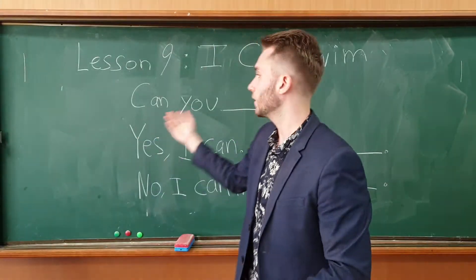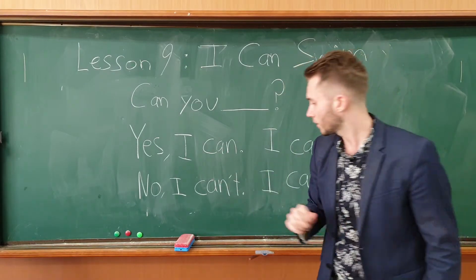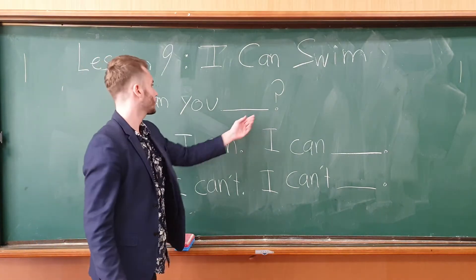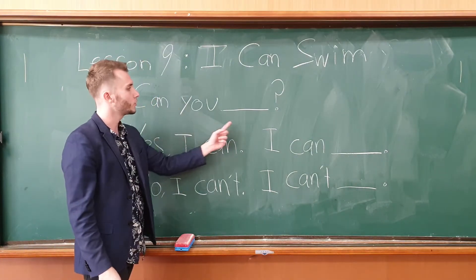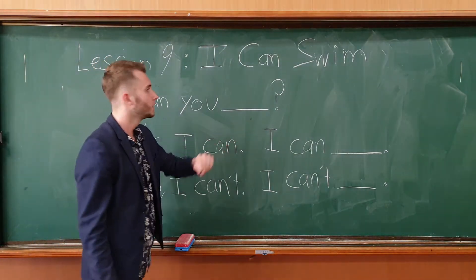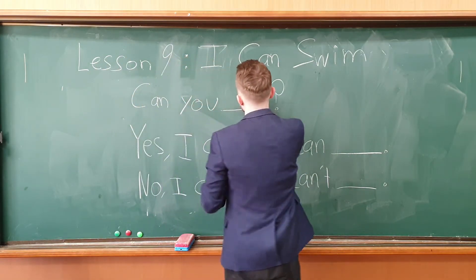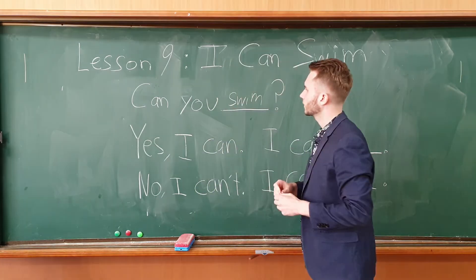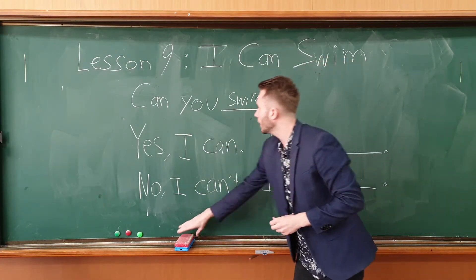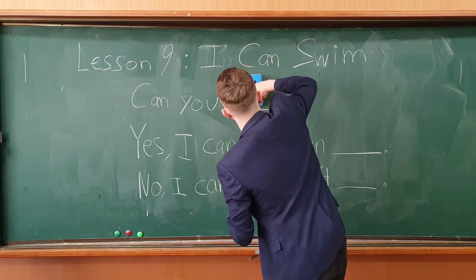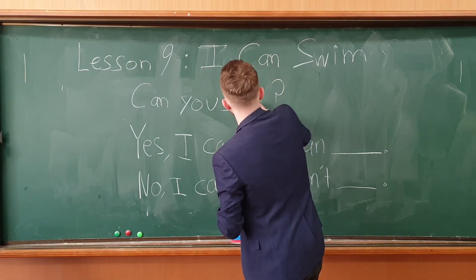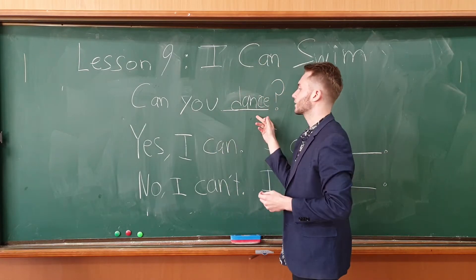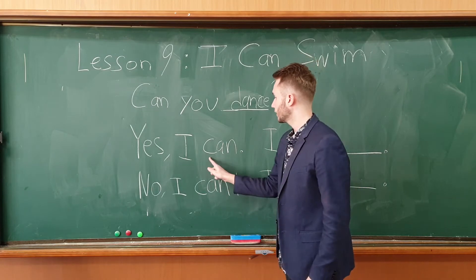Up here on the board are your key sentences. First is our question: 'Can you blah blah blah' — so since we have swim in the lesson, let's change it to 'dance.' So you ask: 'Can you dance?'